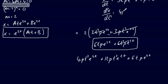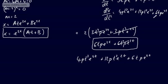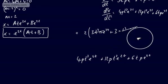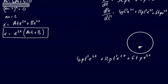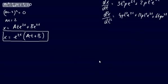So d²x/dt² = 4pt³e^(2t) + 12pt²e^(2t) + 6tpe^(2t). Lots of product rule in there and lots of messing about, but essentially we've got our values.